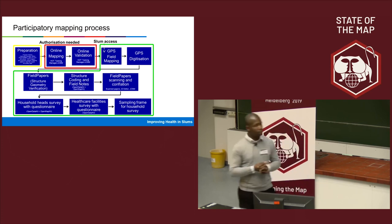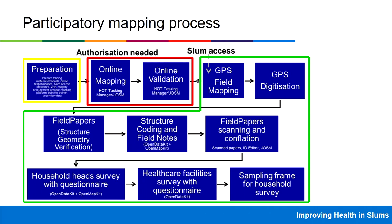The participatory mapping process starts with preparation steps: negotiating the slum assets with local partners, preparing the mapping platform using the HOT Tasking Manager, procuring 50-centimeter satellite imagery, conducting training, and defining responsibilities between Warwick and local partners across Asia and Africa. The next step is online mapping using the Tasking Manager, then online validation using JOSM with the help of experienced mappers. After that, we go to the field for GPS field mapping, tracking roads and footpaths in particular, and conflating the OSM database at the GPS visualization level.